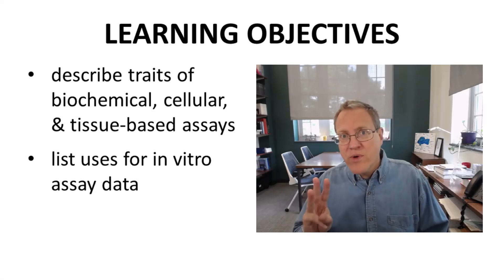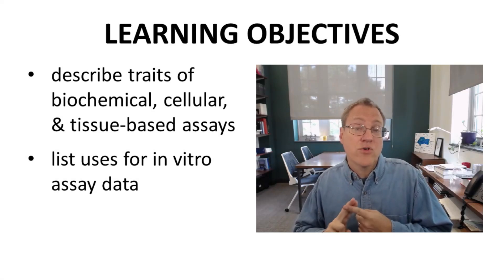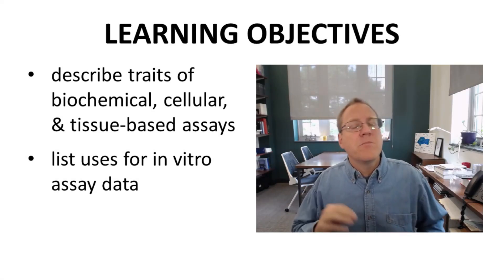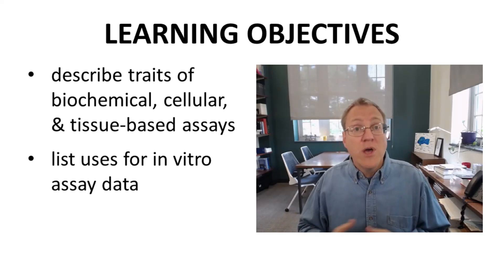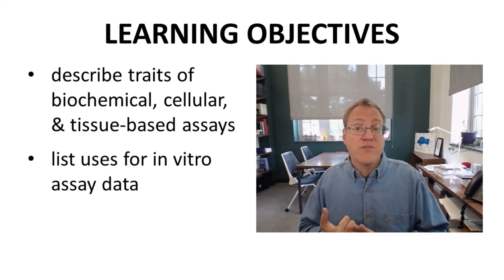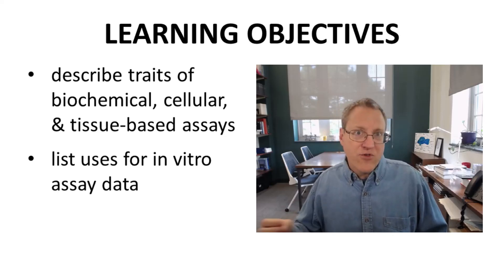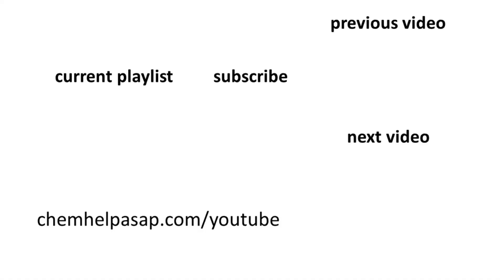We have discussed three different types of in vitro assays: biochemical, cellular, and tissue-based assays. Biochemical assays are for target-based programs, while the other two can be used with both target-based and phenotypic programs. We also emphasized the role of in vitro assays in early drug discovery. This was a brief survey of selected types of in vitro assays for drug discovery. Please like, subscribe, or leave a comment.